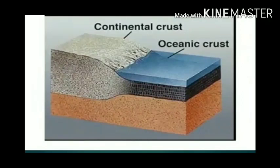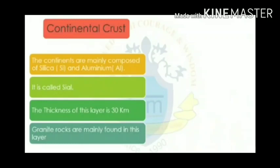The crust is divided into two parts: continental crust and oceanic crust. The continental crust is mainly composed of silica (Si) and aluminum (Al), so it is called Sial. The thickness of this layer is about 30 kilometers. Granite rocks are mainly found in this layer.